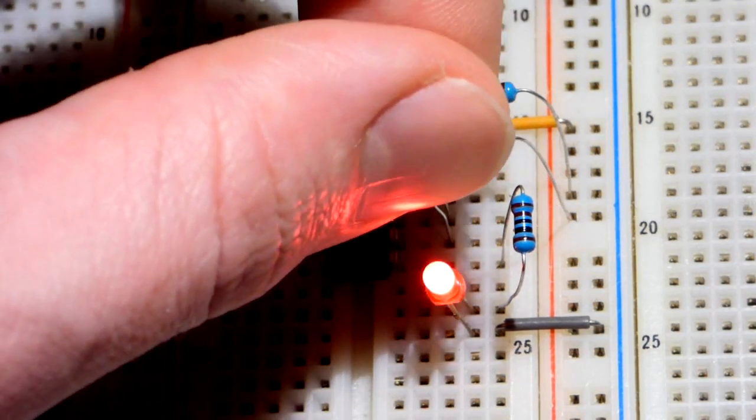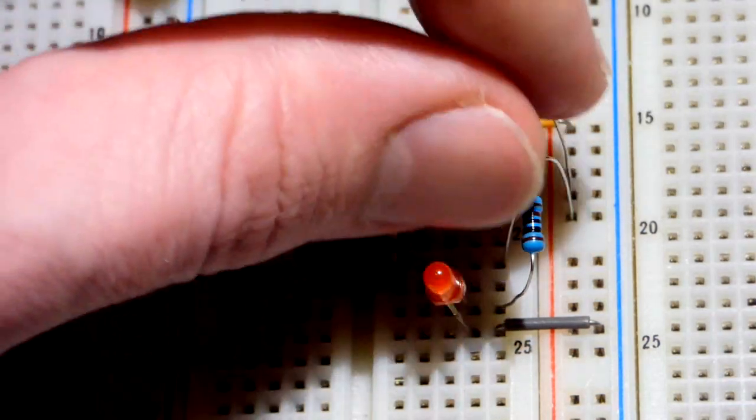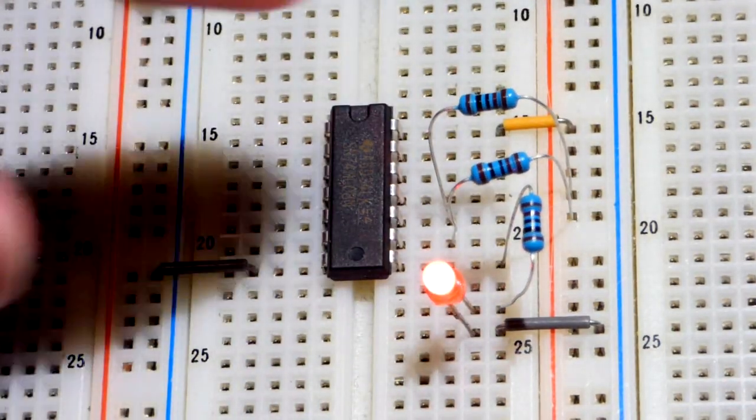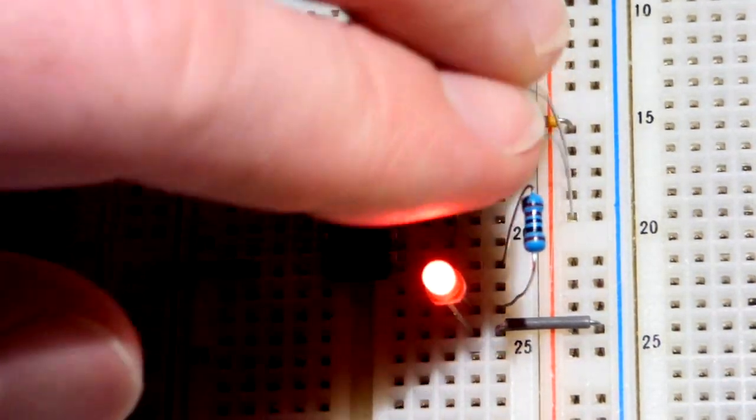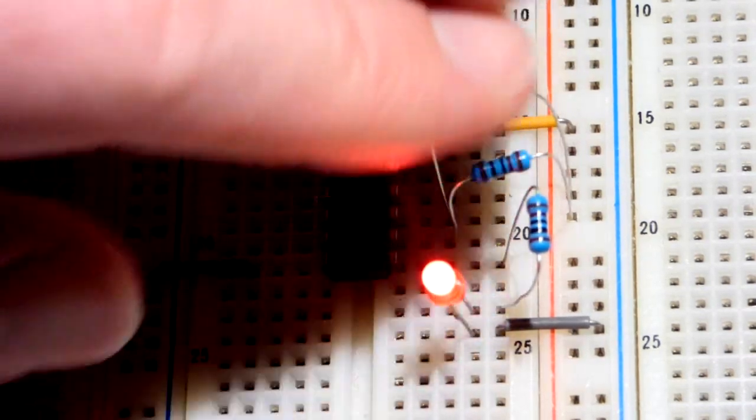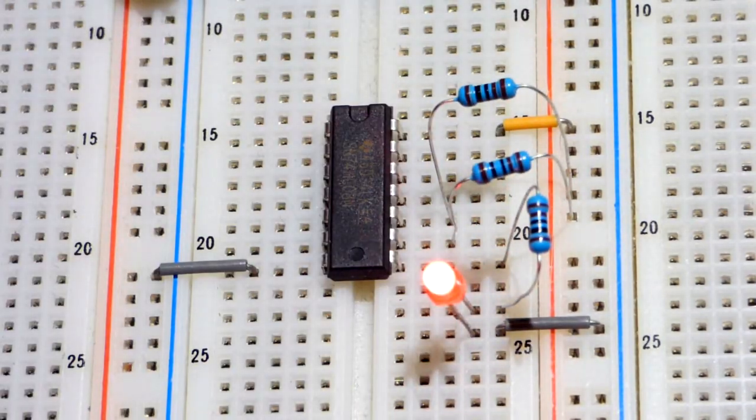You'll notice when I plug into the positive rail, the LED got brighter and now it's holding really well. I bumped the power supply, but now it's holding really steady and it's not flickering or anything. We have a solid positive signal to both of the inputs.